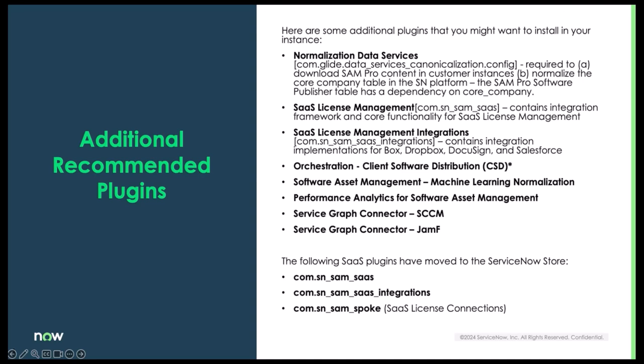In addition to the plugins we just went over, there are some additional plugins you might want to install in your instance. Software normalization data services is going to normalize your core company table that is used throughout the platform. Some of the SaaS plugins — either SaaS license management or SaaS license management integrations — are going to help you manage those SaaS products.